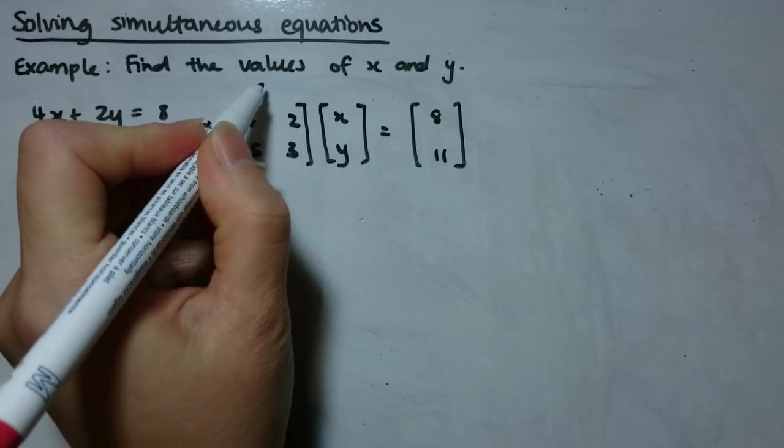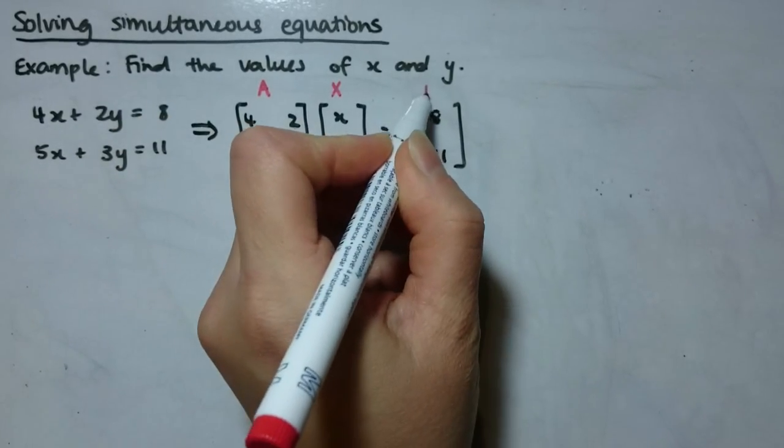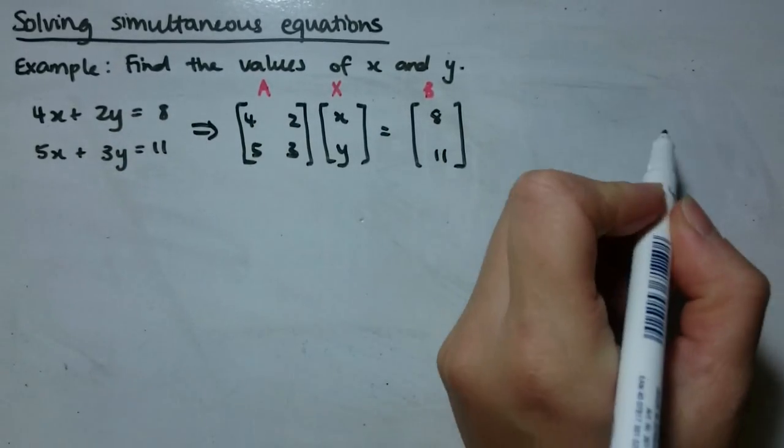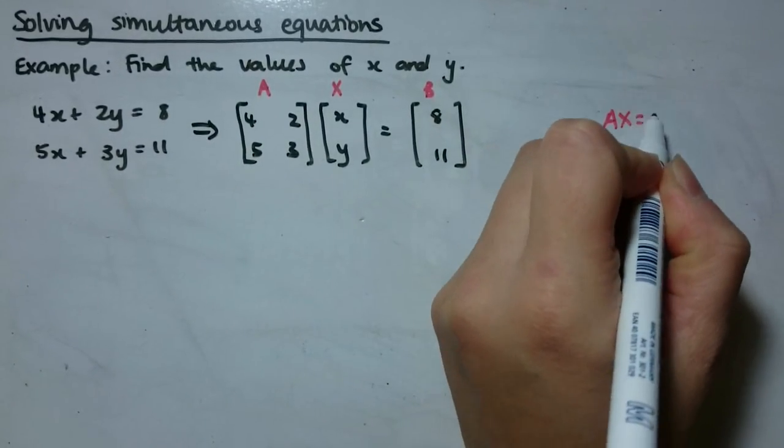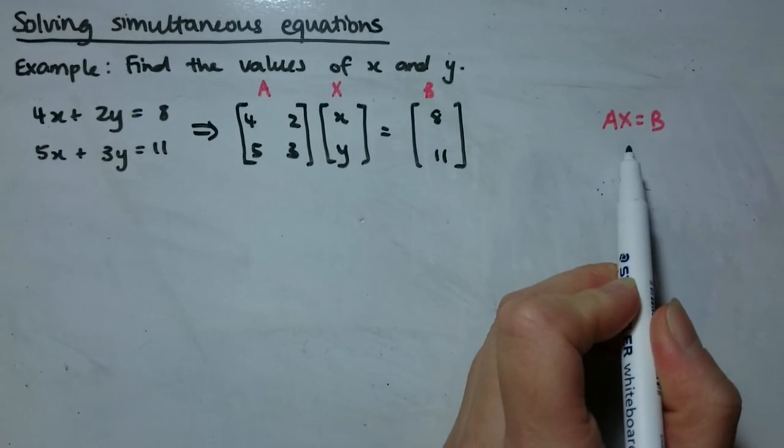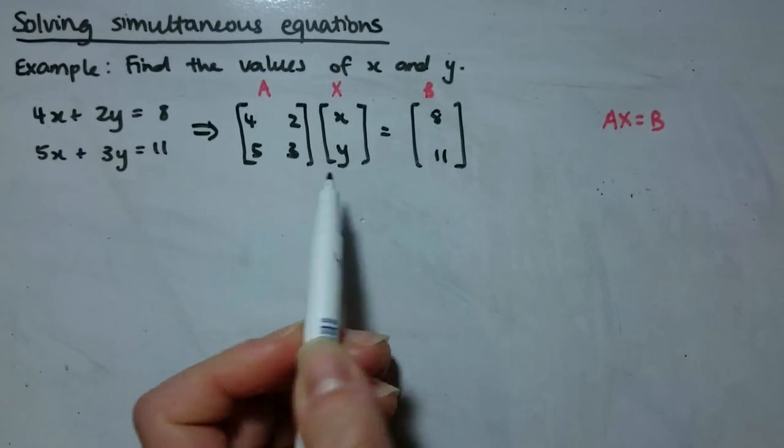Again, this is not something you have to do every time, but if you name them A, X, and B, what you've actually got over here is AX equals B. You want to solve this equation for the matrix X so that we can work out the values of x and y.